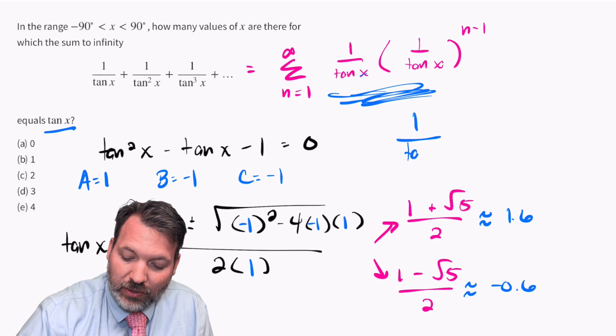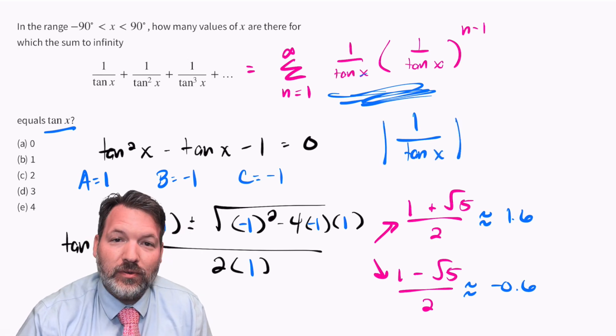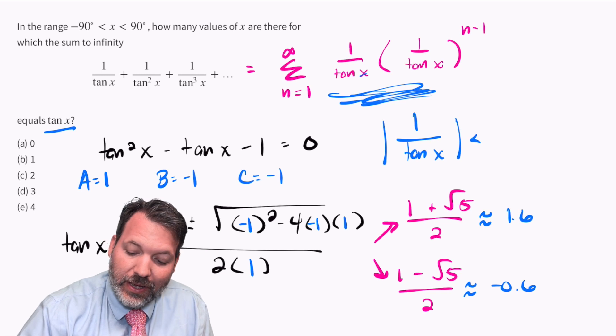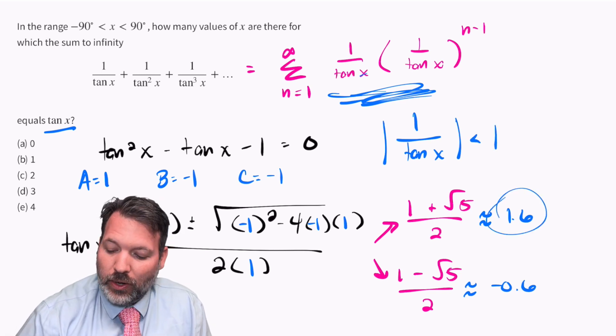Remember, for this original series to converge, we needed the absolute value of the ratio, that is the absolute value of 1 over tangent x, to be less than 1. While 1 over 1.6 is less than 1, 1 over negative 0.6, once we take its absolute value, is not less than 1.